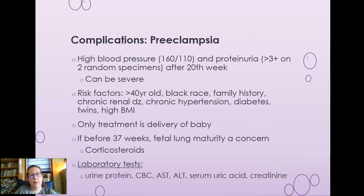Preeclampsia involves high blood pressure and proteinuria — three plus on two random specimens after the 20th week. Risk factors include being over 40 years old, Black race, family history, chronic renal disease, chronic hypertension, diabetes, twins, or high BMI. The only treatment for preeclampsia is delivery of the baby. If delivery must happen before 37 weeks, fetal lung maturity must be assessed. Corticosteroids can be given to the mother to mature the baby's lungs. Lab tests include urine protein, CBC, AST, ALT, serum uric acid, and creatinine to assess liver function — many of these would be elevated in preeclampsia.